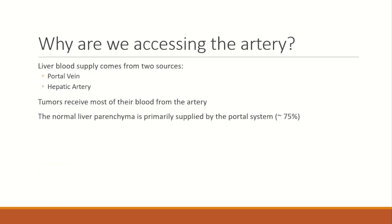Before diving too deeply into anatomy, we'll start off with some physiology. You may ask why it is possible to embolize hepatic tumors without damaging the normal liver. This stems from the blood supply of the liver, which comes from both the portal vein and the hepatic artery. Tumors tend to receive most of their blood from new arteries created by angiogenesis, while a majority of the blood and oxygen supply to normal liver tissue is provided by the portal vein. So even if the embolization agent affects normal liver arteries, the tissue still gets a majority of its normal blood supply.